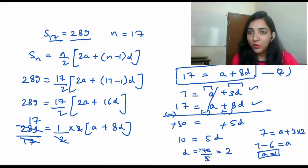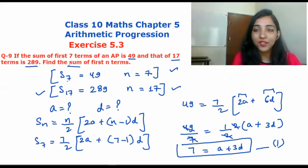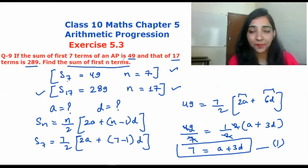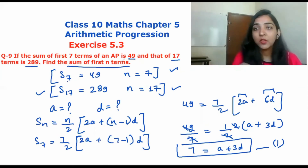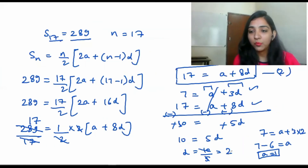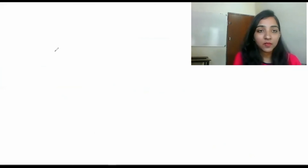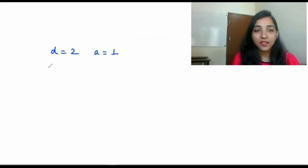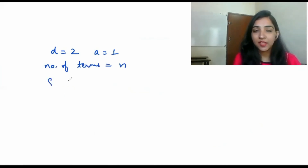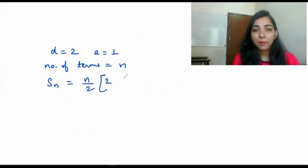Now we have a = 1 and d = 2. The question asks us to find the sum of the first n terms, Sn. We use the formula Sn = n/2 × (2a + (n−1)d), substituting a = 1 and d = 2.